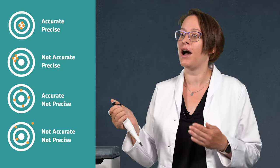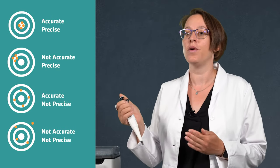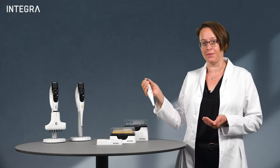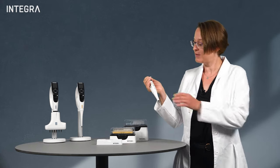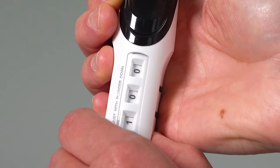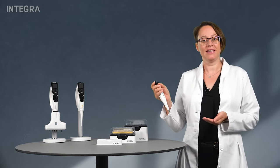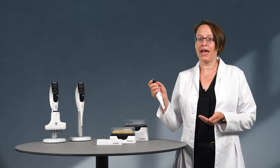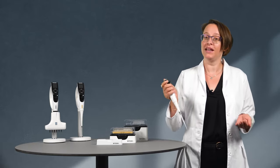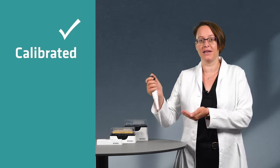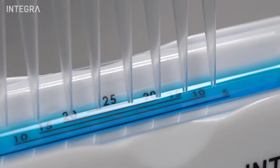Accuracy refers to how close the value is to what you set the pipette to dispense. For example, if you set your pipette to 300 microliters, how much is actually dispensed? Accuracy can vary depending if a pipette has been properly calibrated, but the way a person pipettes also affects the accuracy.